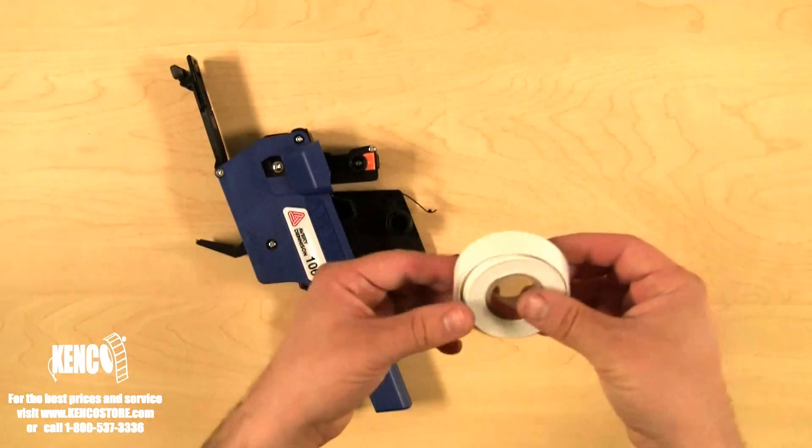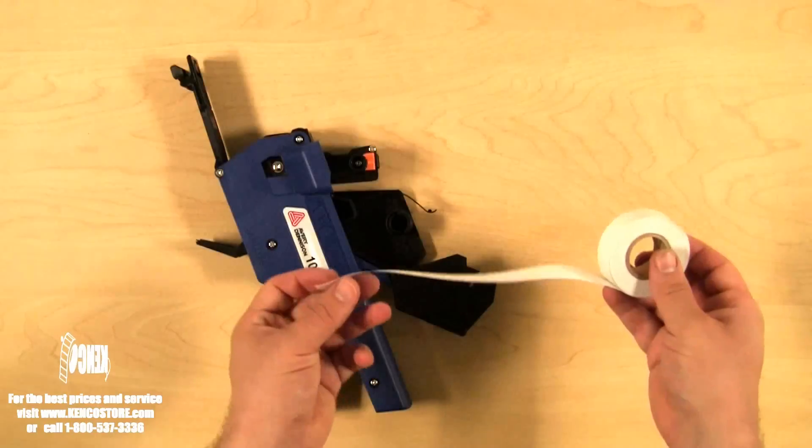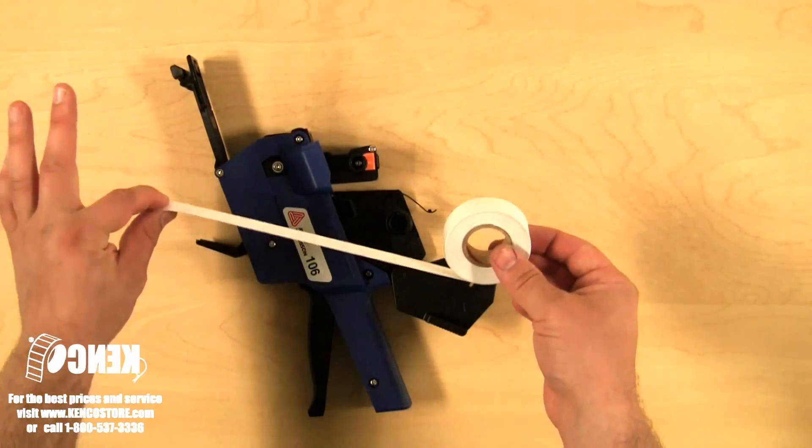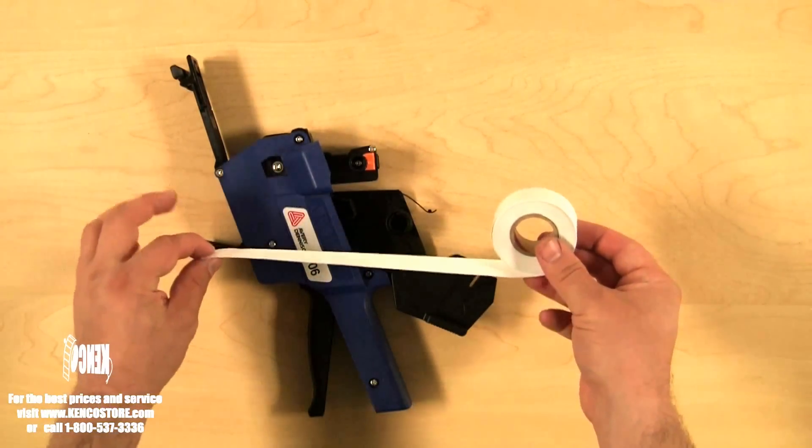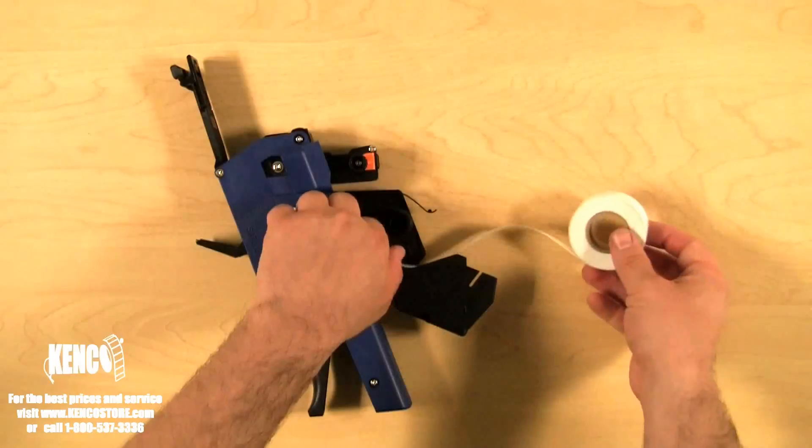Now we're going to take a roll of labels and feed it through the center of the gun, sort of through this cavity that's on the bottom here. So we're going to put it here.